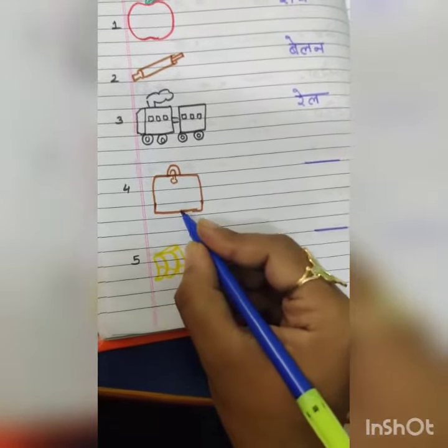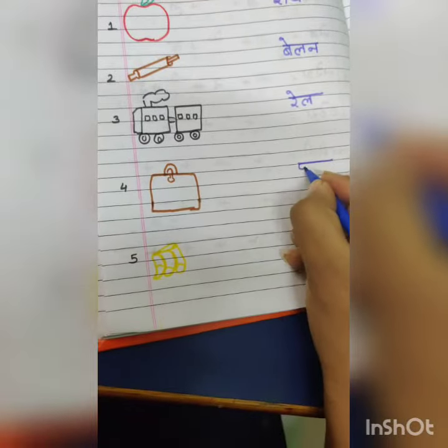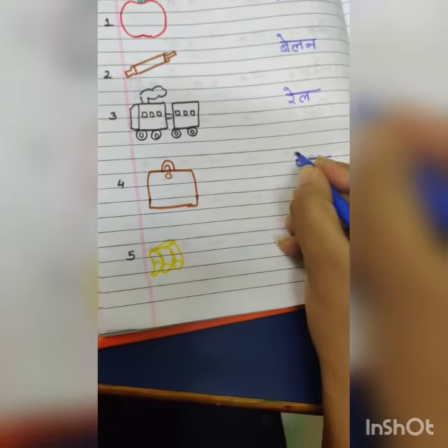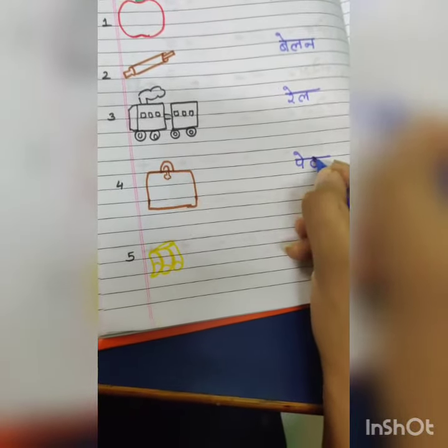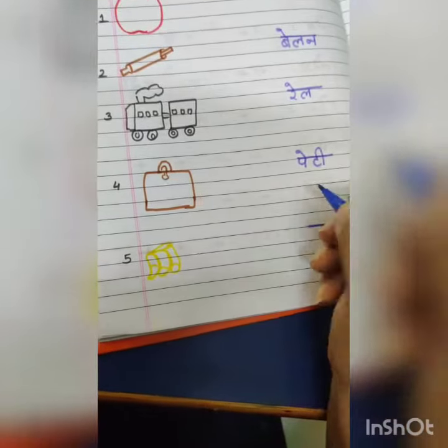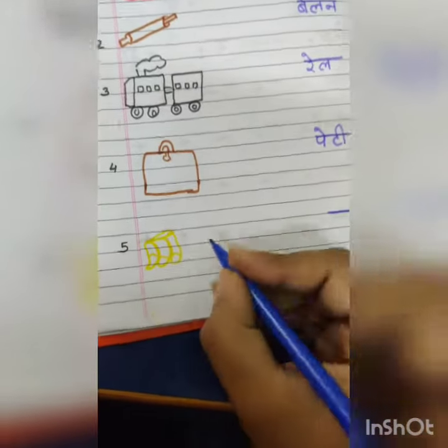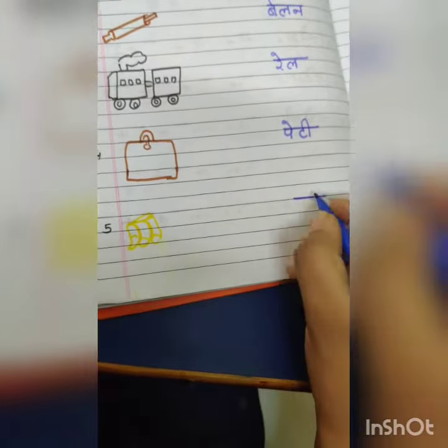And this is peti: pa mein a ki matra, then ta mein badi ki matra — ti, peti.